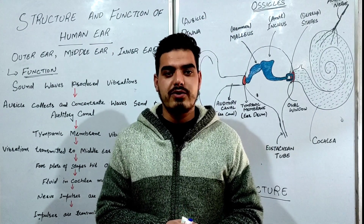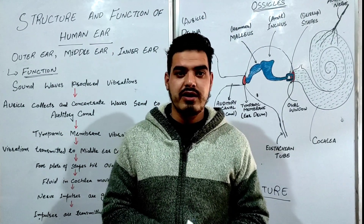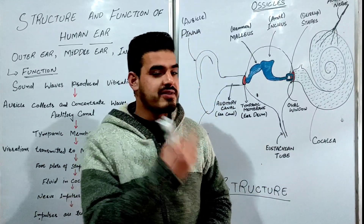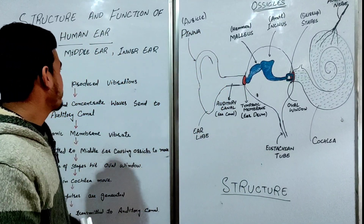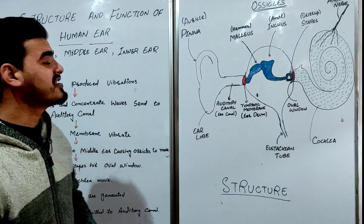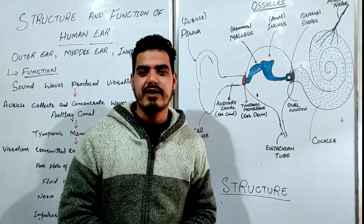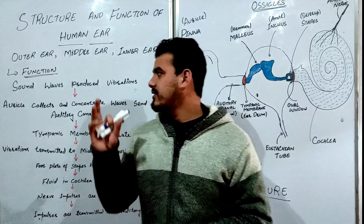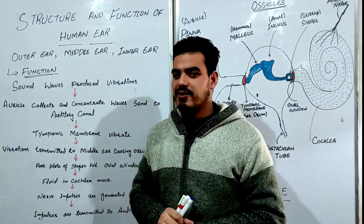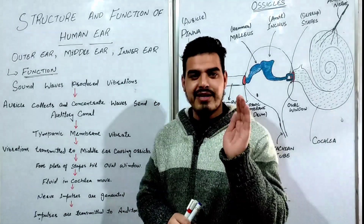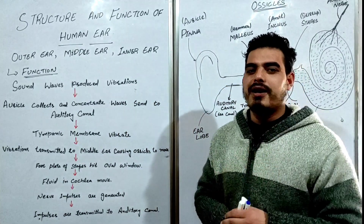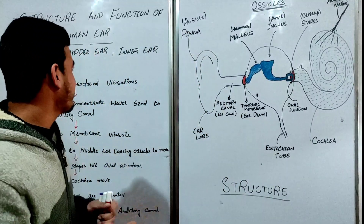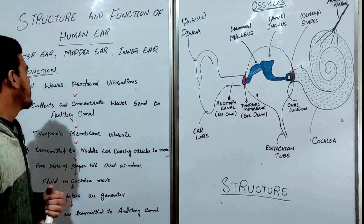As-salamu alaykum wa rahmatullahi wa barakatuh, dear students, I am Syed Firdous. Welcome to ICI. Today we are going to discuss an important topic of chapter Sound in Physics, which is the structure and function of the human ear. The human ear is a mixture of biology and physics. Sound is part of physics and the human ear is part of both biology and physics. We start with the structure and function of the human ear.